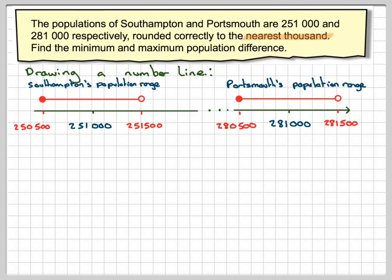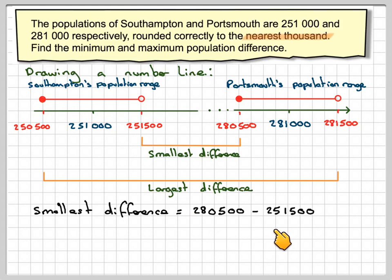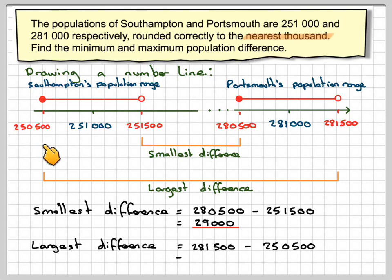We want the minimum and the maximum difference. The minimum difference will be by taking the lowest value of Portsmouth, taking away the highest value of Southampton. So the smallest difference would be 280,500 minus 251,500, which gives you 29,000. And the largest difference will be 281,500 minus 250,500, which will give you 31,000.